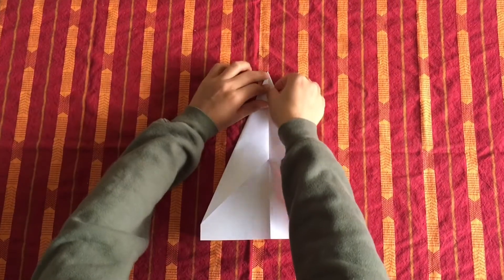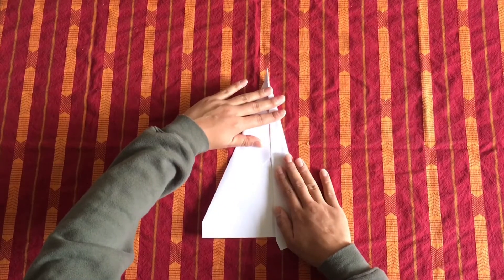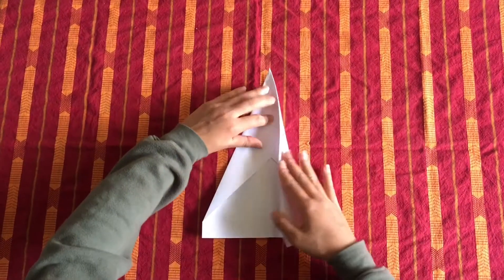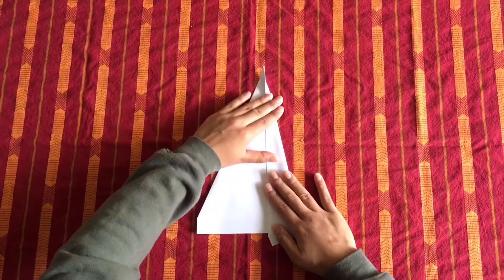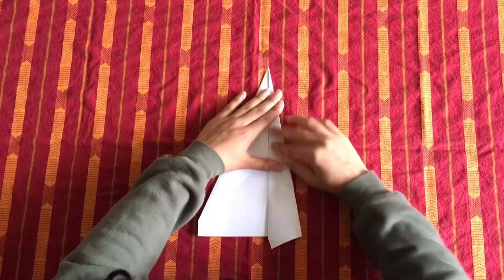Now you're going to take this side and fold it one more time. This whole side here is going to come meet at that middle crease. Make sure you flatten out your point.